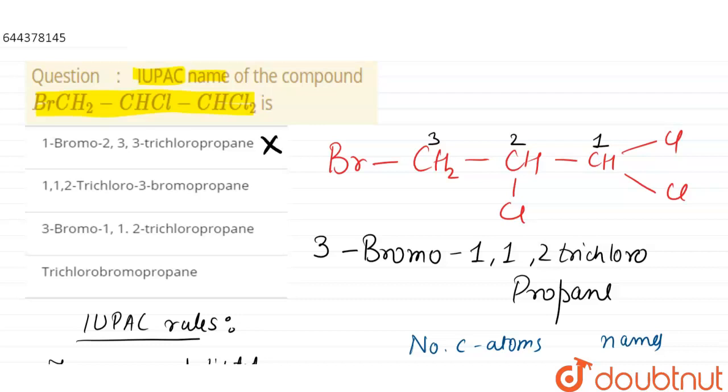1,1,2-trichloro-3-bromopropane—this is also wrong. Next is 3-bromo-1,1,2-trichloropropane—that matches our answer, so third option is correct. Next is trichlorobromopropane—this is also wrong. So the IUPAC name of the compound is 3-bromo-1,1,2-trichloropropane.